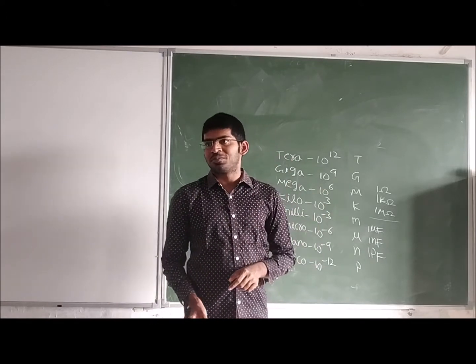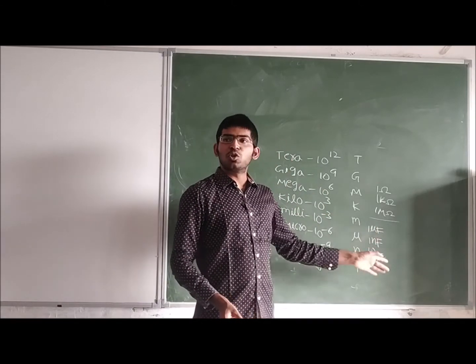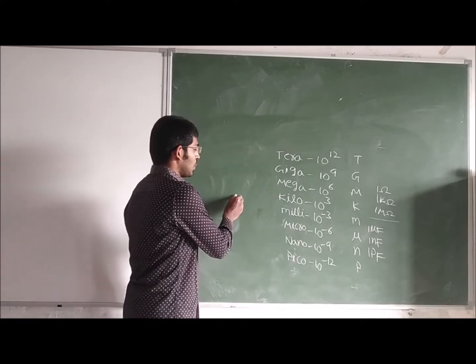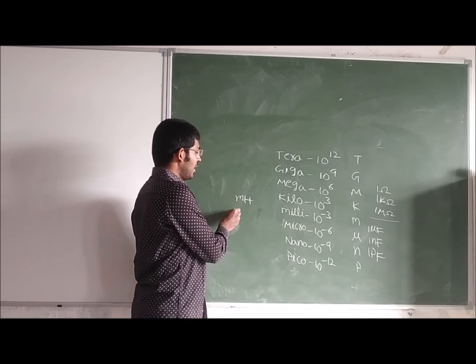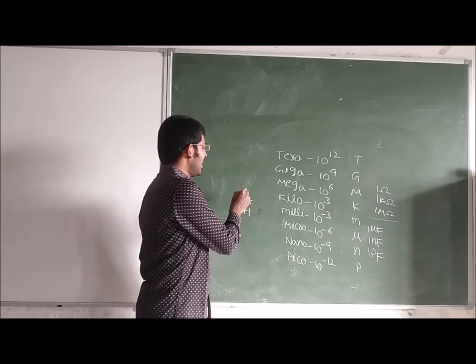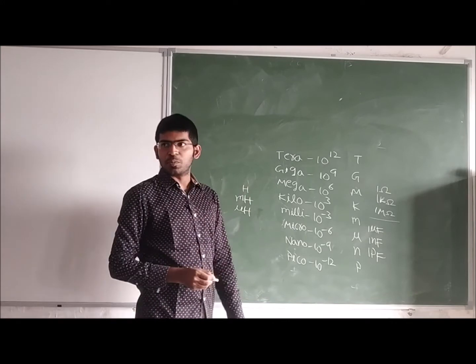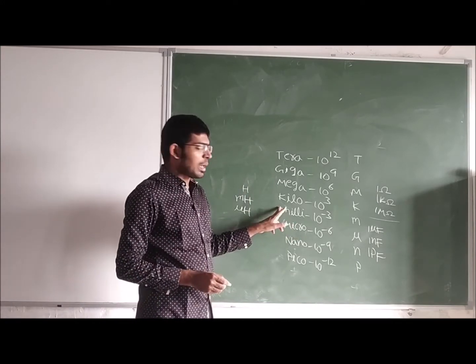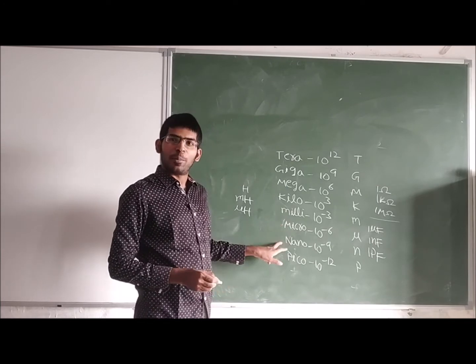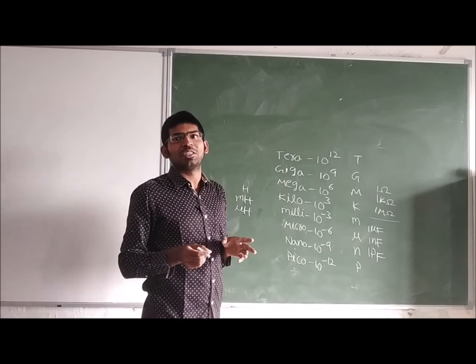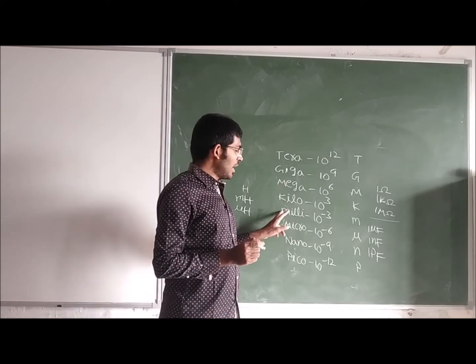This is the measurement we use for capacitance. For inductance, we use milli henry, micro henry. For current, milli amperes, micro amperes, nano amperes. We don't have kilo amperes—kilo amperes current is very high.